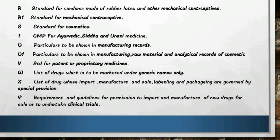Schedule U1 to the rules covers particulars to be shown in manufacturing raw material and analytical records of cosmetics. Schedule V to the rules covers standards for patent and proprietary medicines. Schedule W to the rules is the list of drugs which are to be marketed under generic name only. Schedule X to the rules covers drugs whose import, manufacture, sale, labeling and packaging are governed by special provisions.